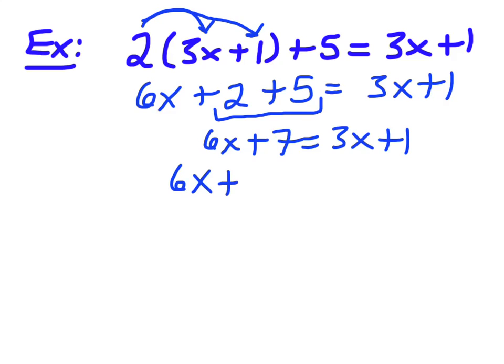I'm going to go numbers. So, plus 7, minus 7 is equal to 3x plus 1, minus 7. So, both sides. We have to do it on both sides. Cancel, cancel.